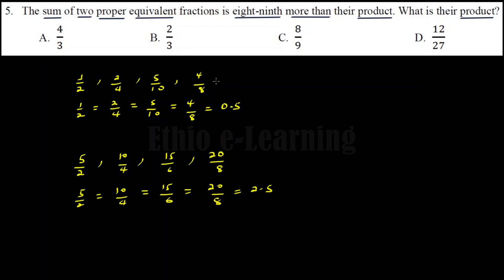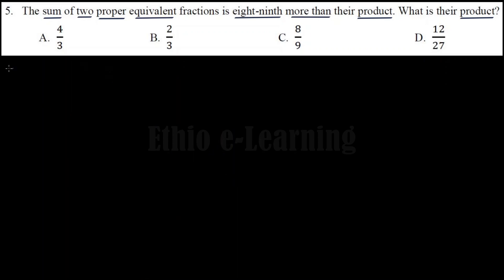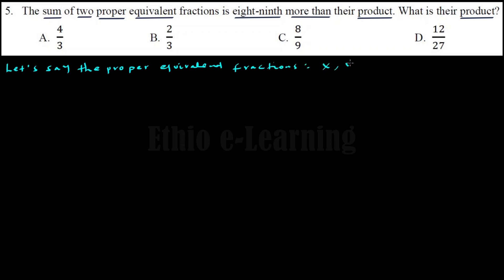So, for two proper equivalent fractions, the nominator and denominator must be proportional. Since they are equivalent fractions, they cannot be improper fractions. So let's say the two proper equivalent fractions are represented by x.